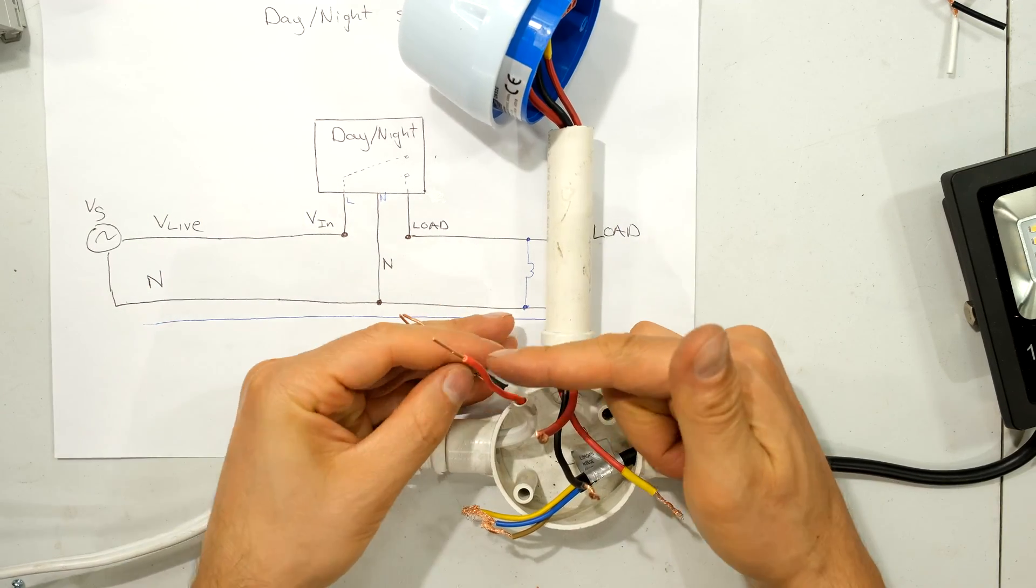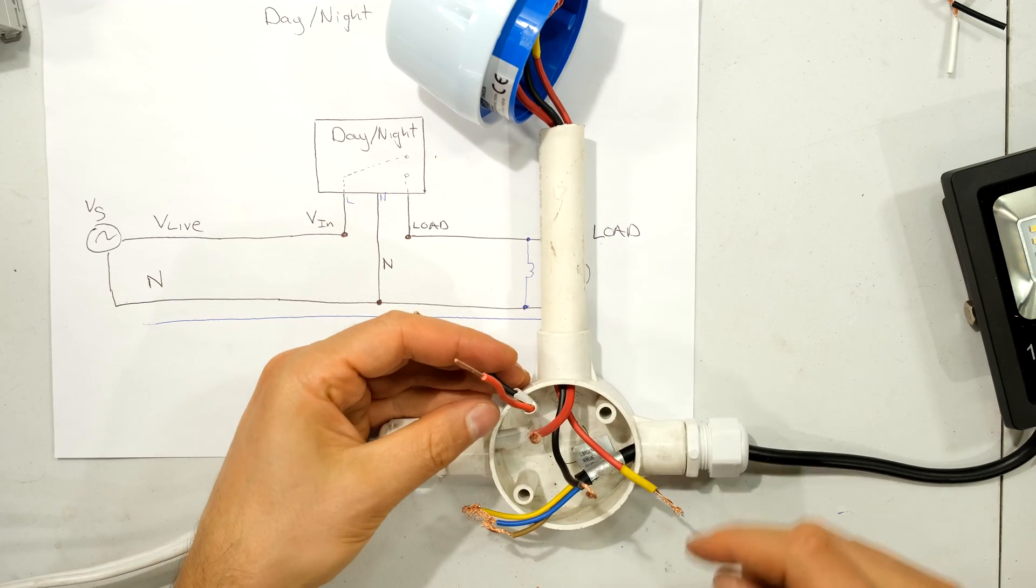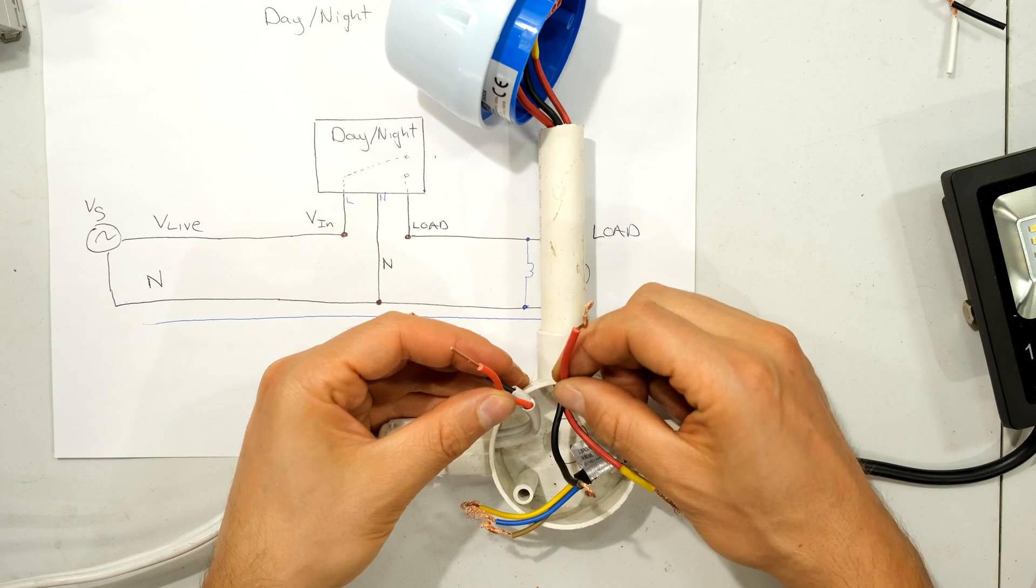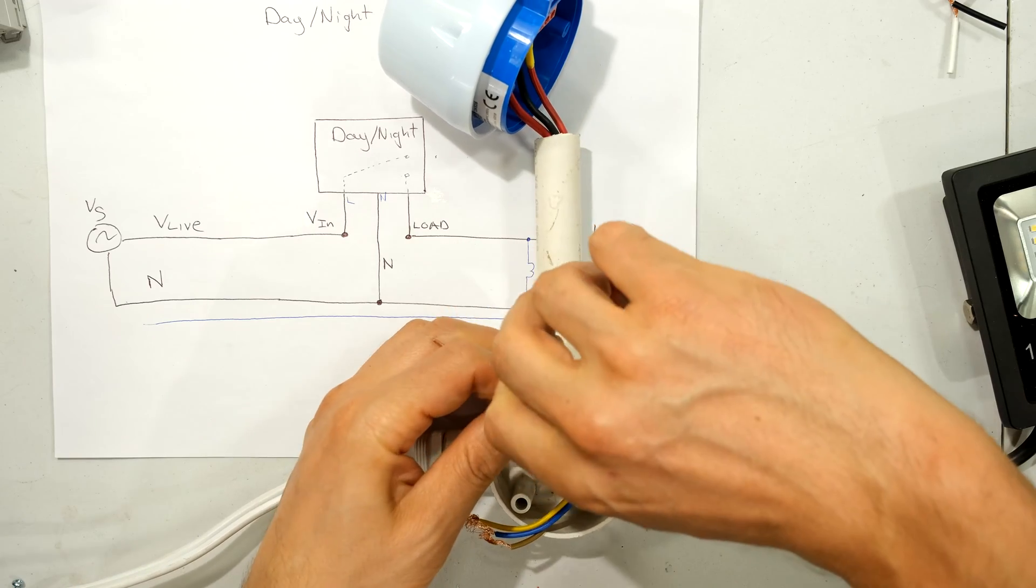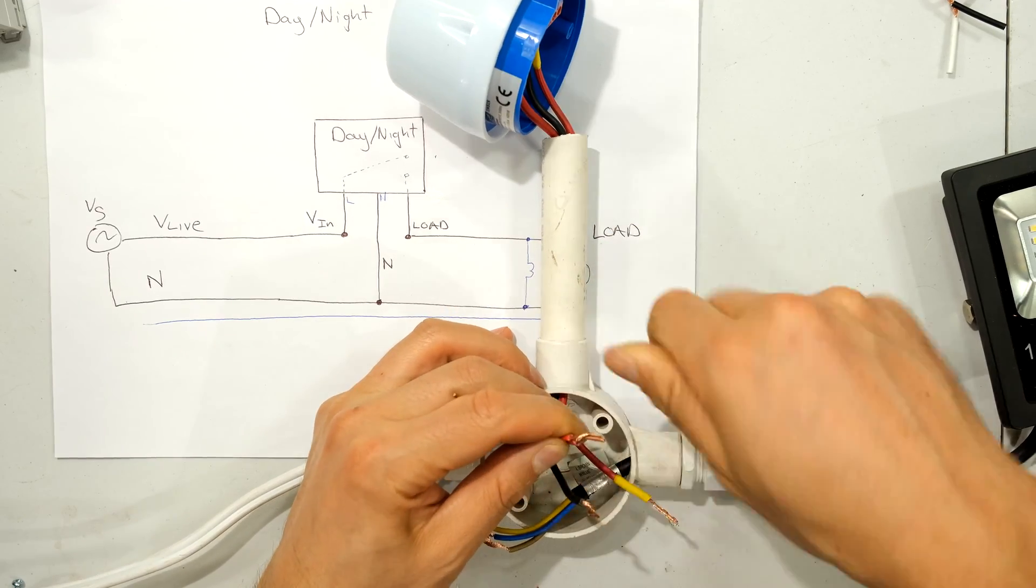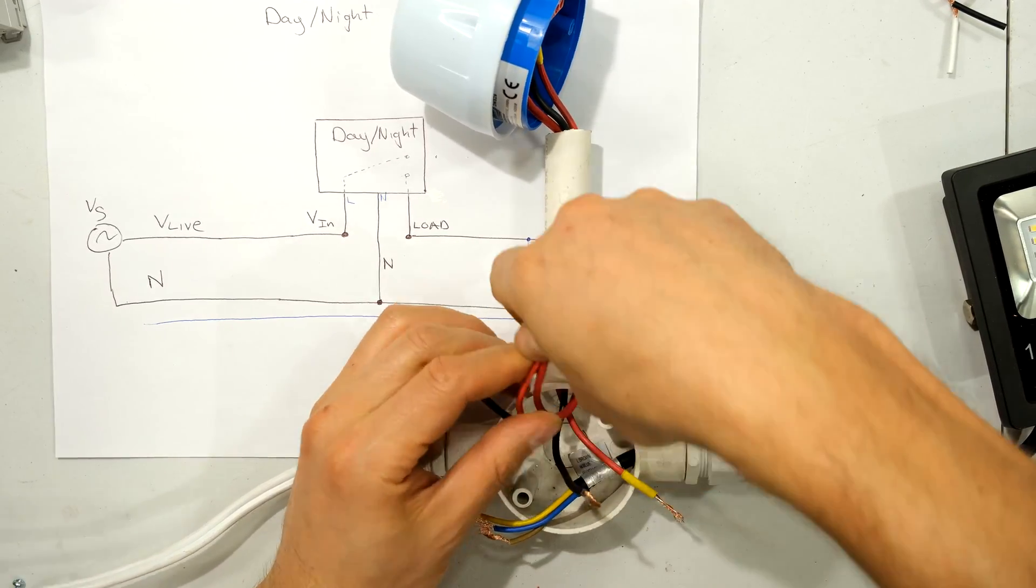So my incoming live wire is this one over here. This is my supply side and the live going to my day-night sensor is this wire over here. So these two need to be joined together. I'm just going to twist them for now.